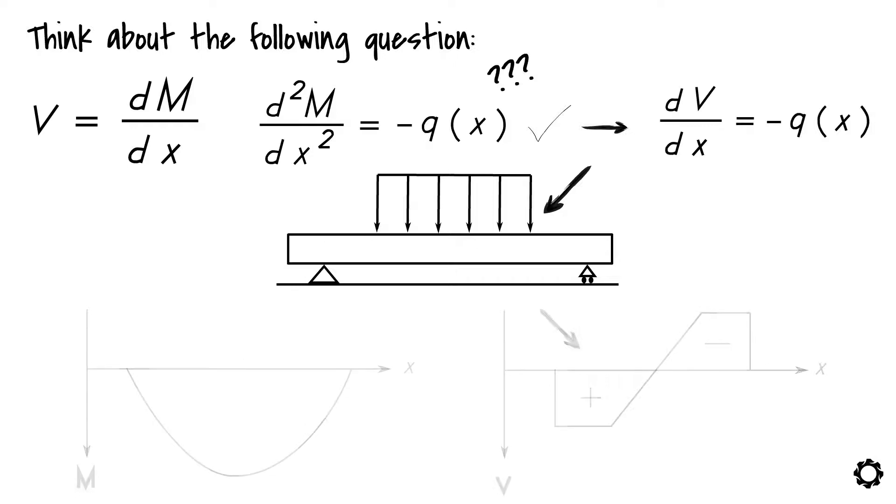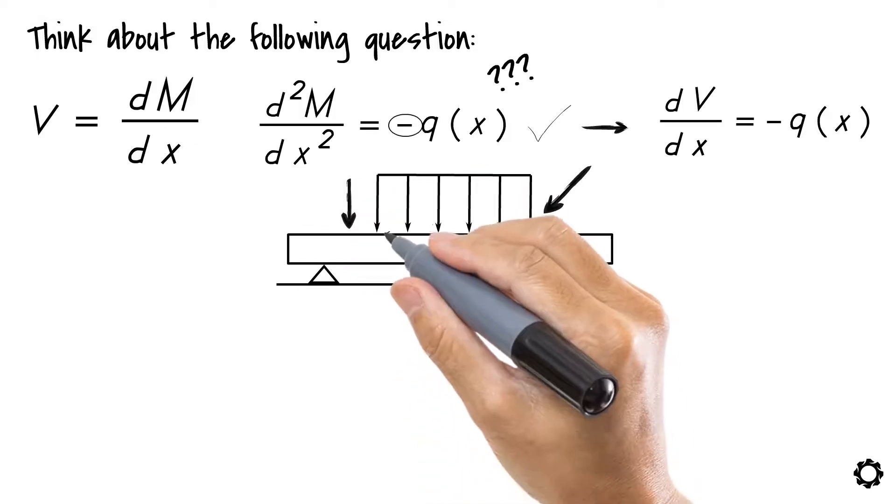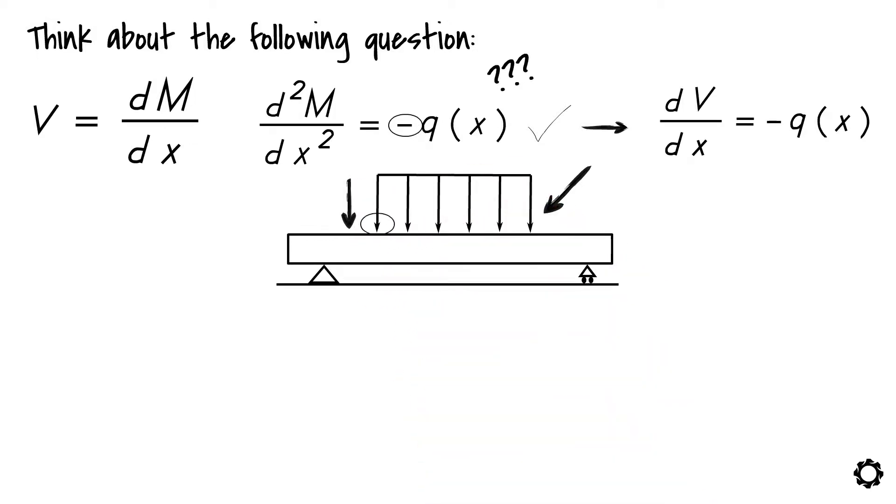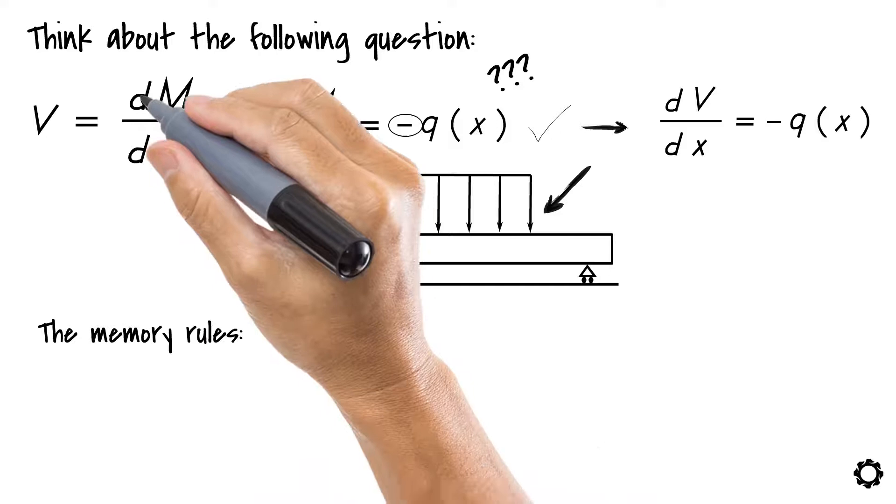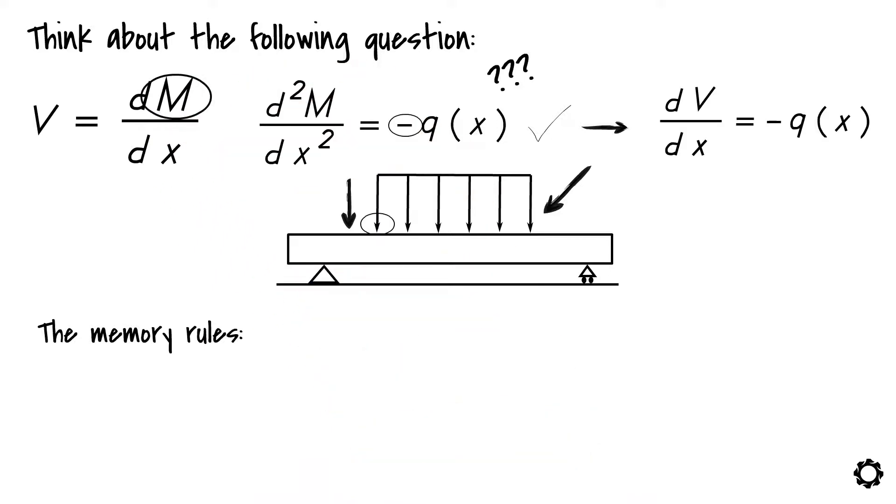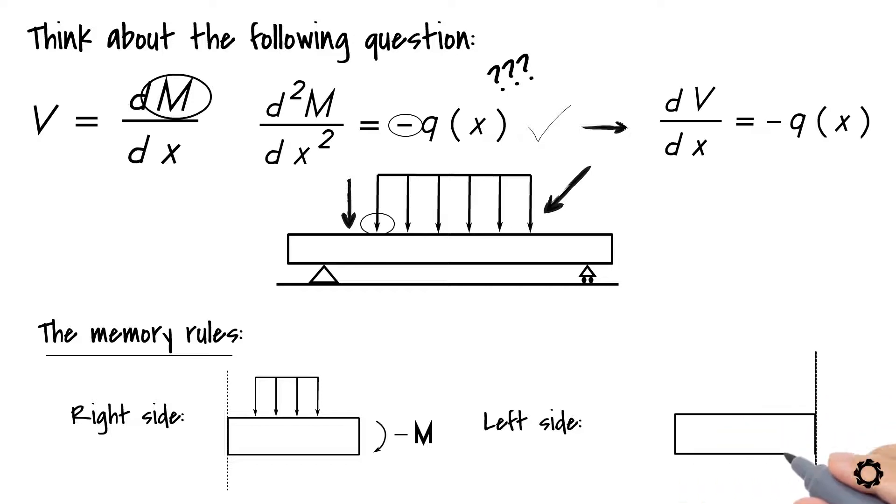One thing that is good for you to also know is that the distributed load usually causes a negative bending moment because of the downward direction where the load is usually pointing at. If you remember the memory rules related to the moment which were presented a couple of times in earlier videos, you understand why. If we are looking at the right side of the structure section, then the distributed load causes a negative moment because the direction of the moment which it creates is clockwise. At the left side of the section, the load will then create a counterclockwise moment which causes the moment to be negative again.